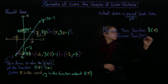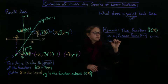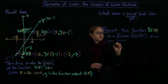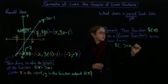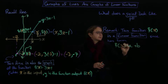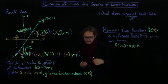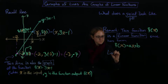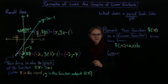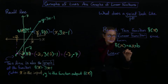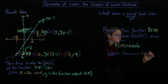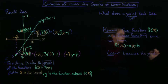It has the form f of x equals ax plus b — so like slope and intercept. We call this linear because its graph looks like a line.